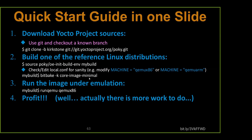Get in the habit of using 'bitbake -k' so that it'll just continue until it can't do anymore — very, very important. We're going to use core-image-minimal, one of the recipes from our meta layer. We haven't talked about layers yet — we'll talk about them in a minute. Once we get done building that core-image-minimal, we're going to run it using a helper app that runs QEMU for us, which recognizes the architecture and looks for the last build of that architecture to boot QEMU.